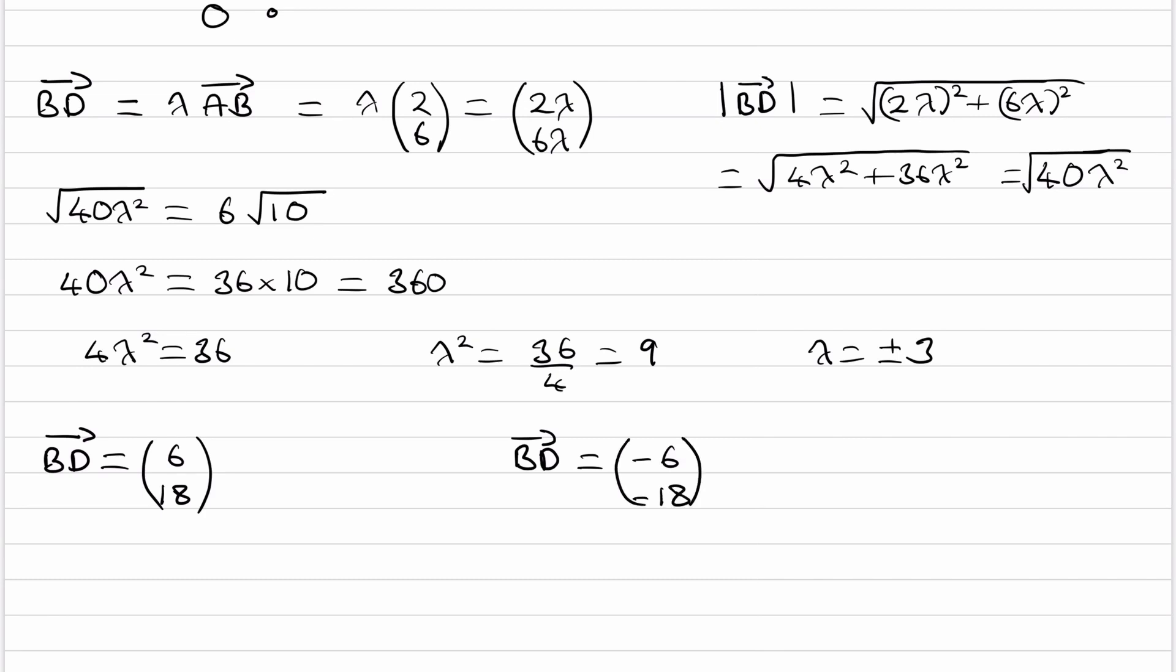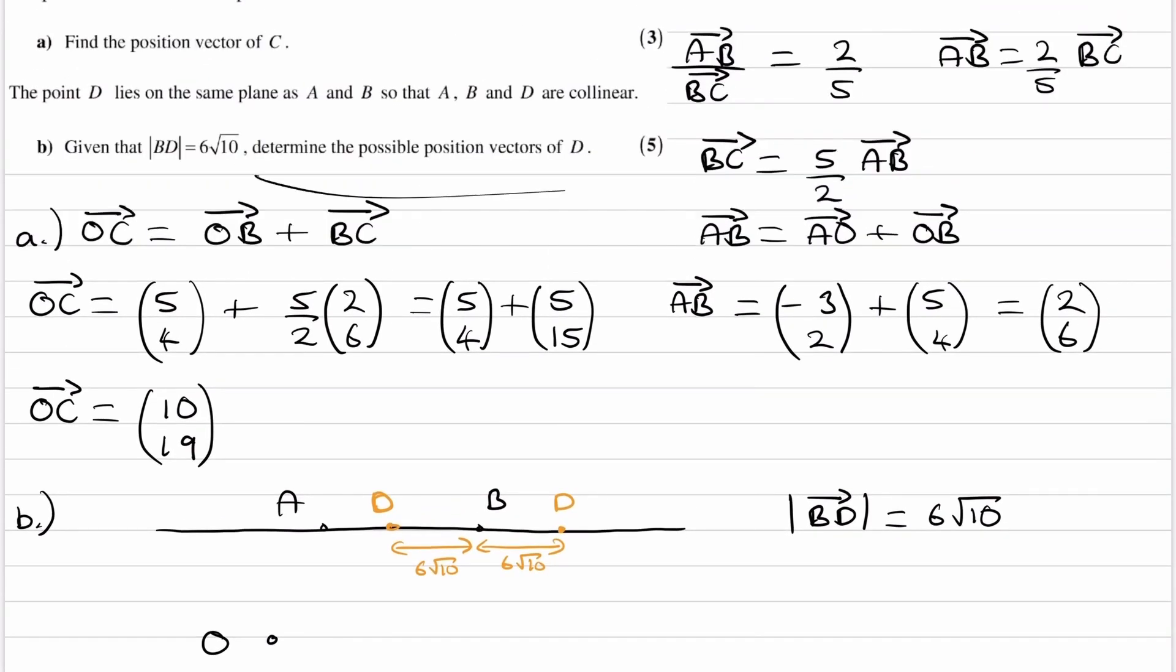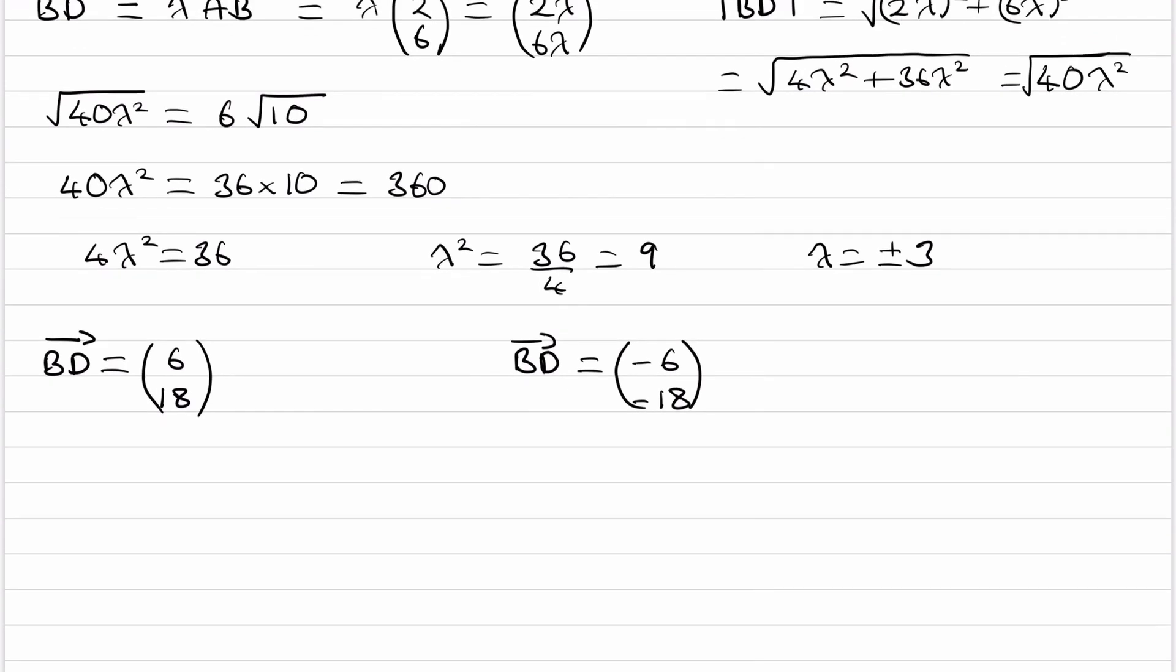But that's not what we want. In this question we want the position vectors of D. So then, if we go from O to B, well, let's first write out OD. OD will be equal to OB plus BD.